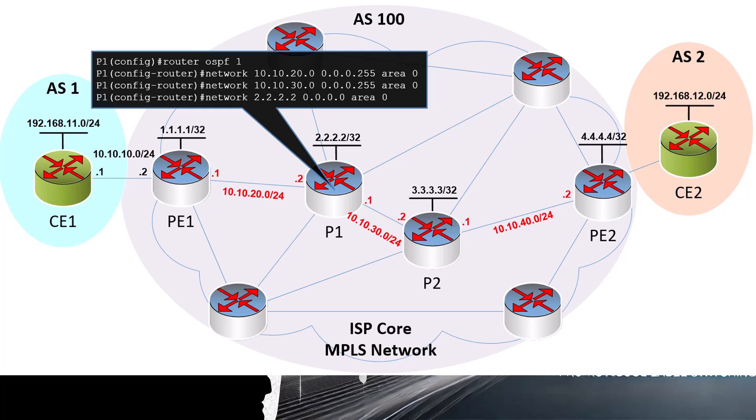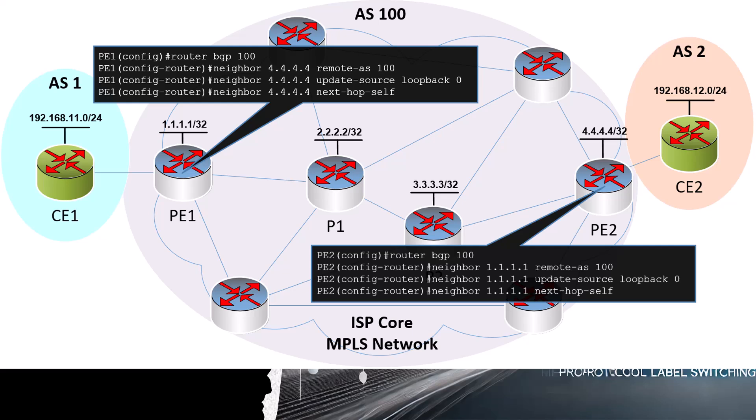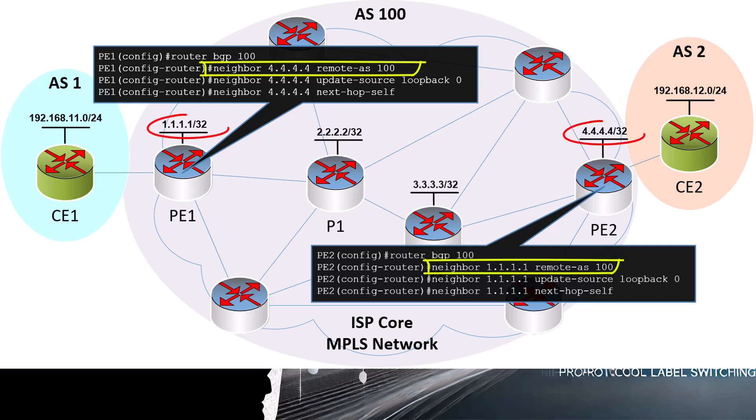Now that all of the P and PE routers are reachable to each other, we can configure iBGP peerings between all PEs. BGP here is used to exchange customer networks only. For our topology, we'll be looking at the iBGP peering that will establish between PE1 and PE2. To configure these peerings, we issue the following commands within each PE, creating the peerings between the loopbacks — which is one more reason why we created those loopback interfaces and why we want them advertised by the routing protocol.